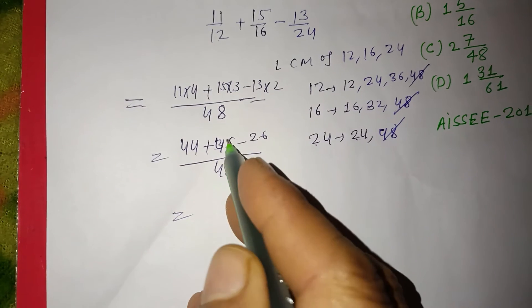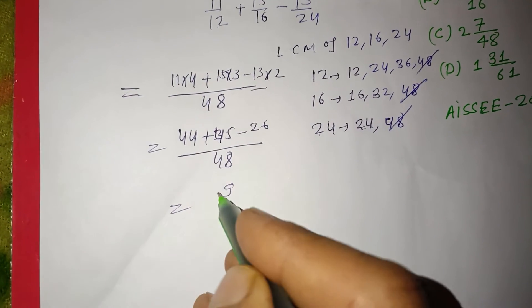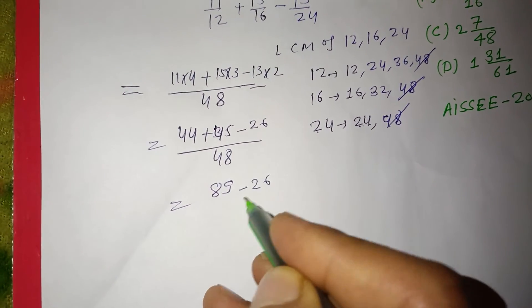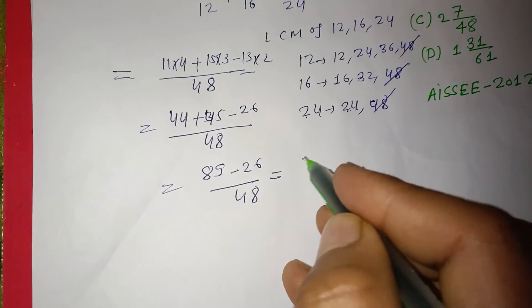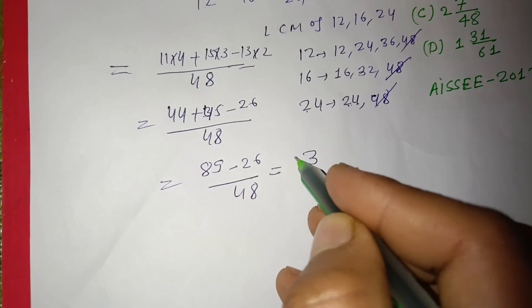44 plus 45 is 89. 89 minus 26 is 63. So we have 63/48.